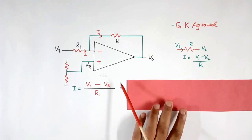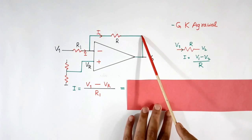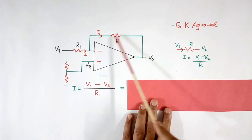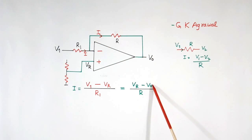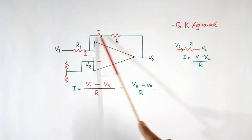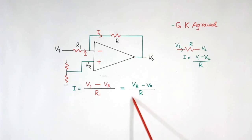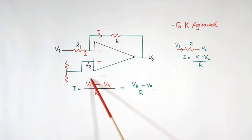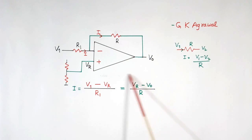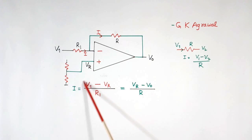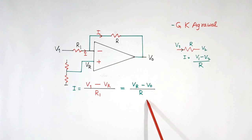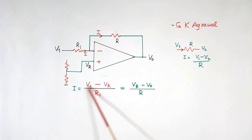This current is equal to the current flowing in the feedback resistor. The current through the feedback resistor equals the voltage across it — that is Vr minus V0 — divided by R. Both currents are equal, so now we have the equation. Using simple mathematics we can solve this equation and find the correlation between V0 and V1.